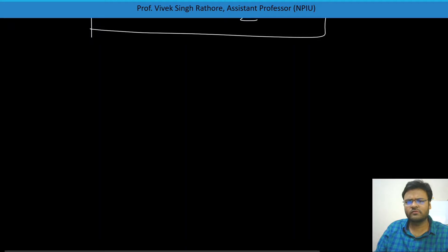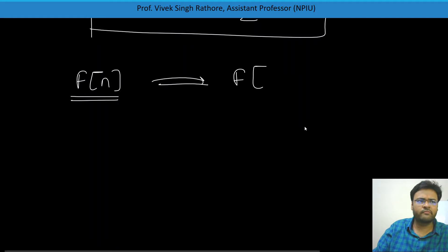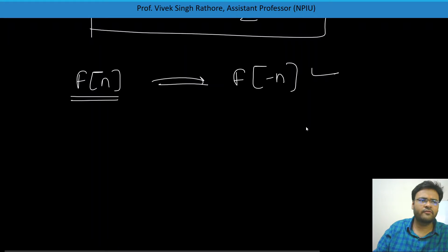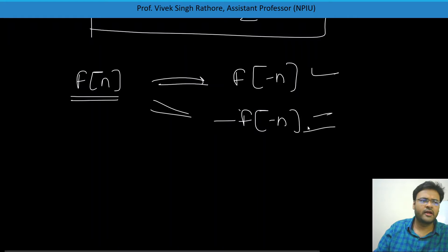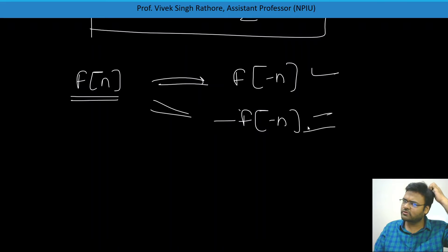For discrete time signals as well, the same conditions apply. F(n) equals F of minus n means it is even. F(n) equals minus F of minus n means it is odd. If neither condition is satisfied, it is neither even nor odd. The same applies for even conjugate parts as well.